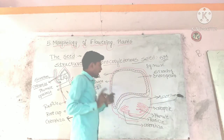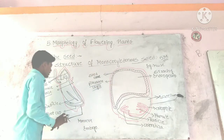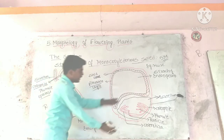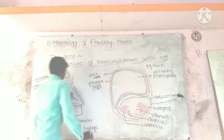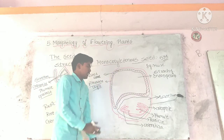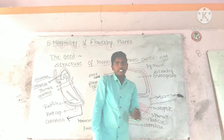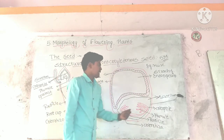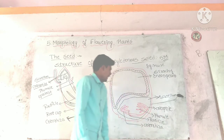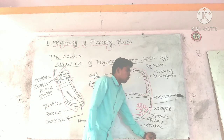In the smaller compartment, the monocot embryo is present. As you already know, the monocot embryo consists of a single cotyledon called scutellum. The plumule is covered by a sheath called coleoptile, and the radicle and root cap are covered by a sheath called coleorhiza.